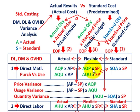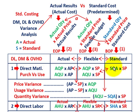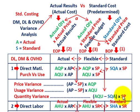The quantity variance is the difference between our flexible amount and our standard amount. The flexible amount is actual quantity used times the standard price; the standard amount is the standard quantity allowed times the standard price. The common factor we can factor out is the standard price. So the quantity variance is the difference between the actual quantity used and the standard quantity allowed, times the standard price.